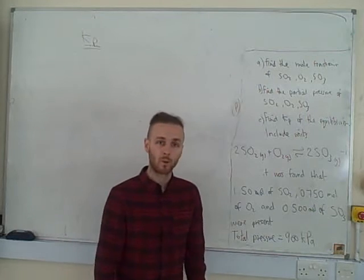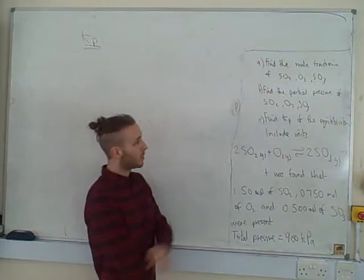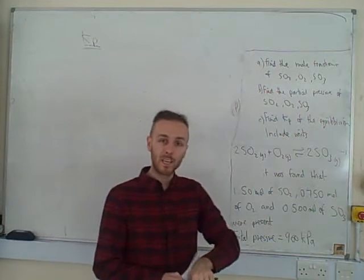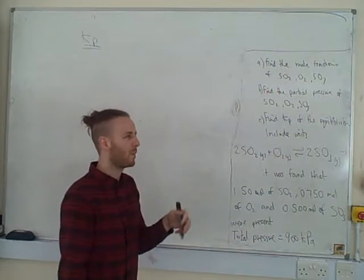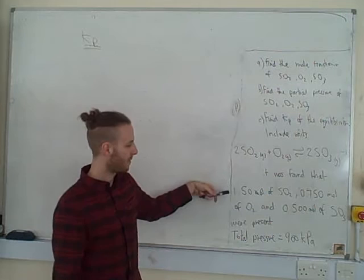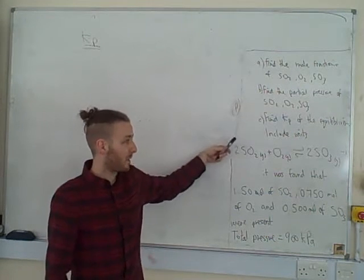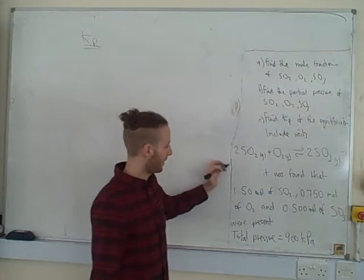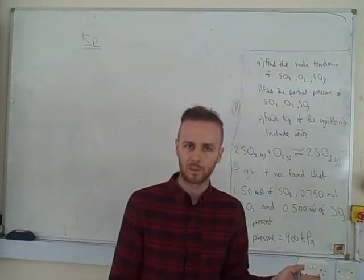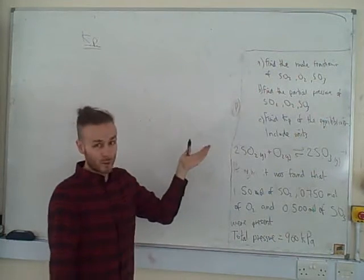Welcome back. Actually, you shouldn't have been able to do part C. We can find mole fractions and partial pressures, but you cannot find KP unless the system is at dynamic equilibrium. I never stated that this system was at dynamic equilibrium, so the answer to part C should have been 'I can't find it.' You have to wait for the system to reach equilibrium before finding mole fractions and partial pressures, and then KP.